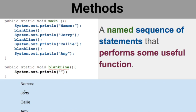This is the output that would happen if I ran this code. Anytime it says print line, it's going to print the word and then move the cursor down one line. Then it calls the blank line method, which does a system.out.println with nothing in the quotation marks — it just moves the cursor down. So it prints 'names', moves down, blank line, prints 'jerry', moves down, blank line, prints 'calli', blank line, then prints 'amy'.